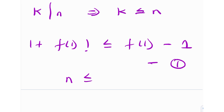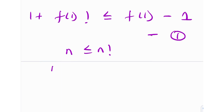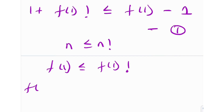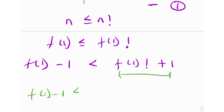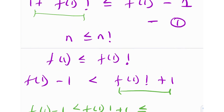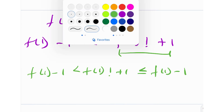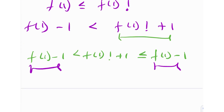I also know that any number n is less than or equal to n!. For example, 10 ≤ 10!, with equality at n = 1. So f(1) ≤ f(1)!. Now, subtracting 1 from the left and adding 1 on the right, we get a strict inequality: f(1) − 1 < f(1)! + 1 ≤ f(1) − 1. But that means f(1) − 1 is strictly less than f(1) − 1, which is a contradiction.